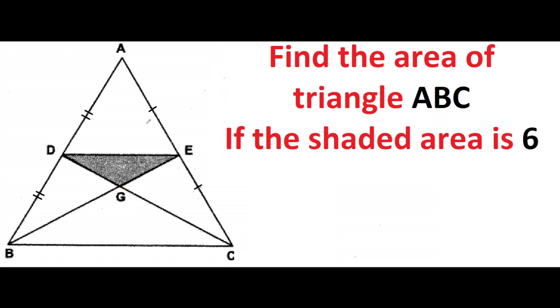We can see that BE and DC are medians here, and we know that this point is the point of intersection of medians. We can call this the point of mass or center of gravity.